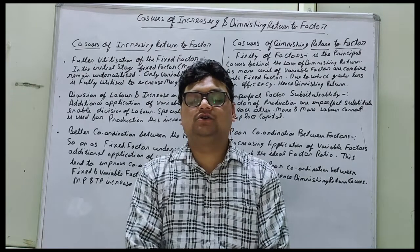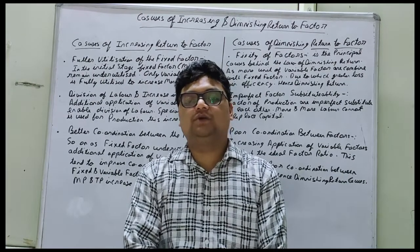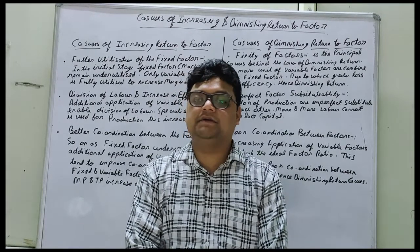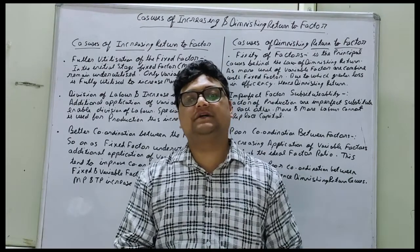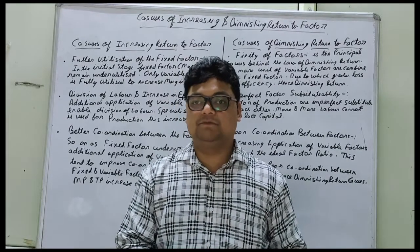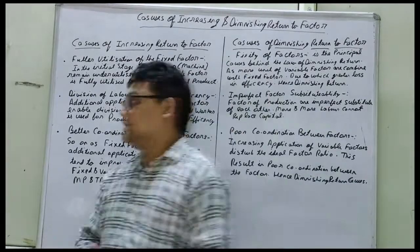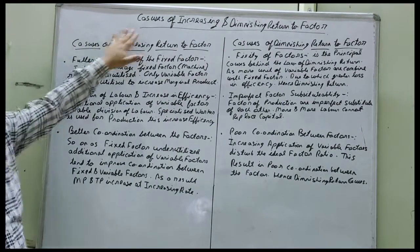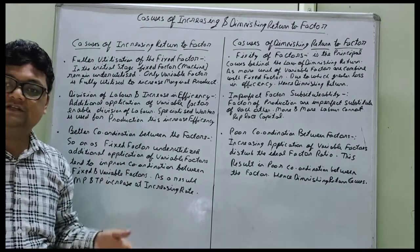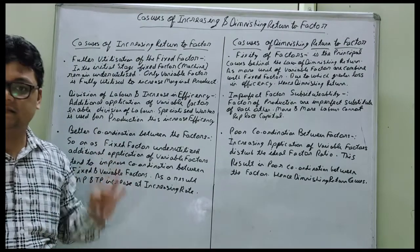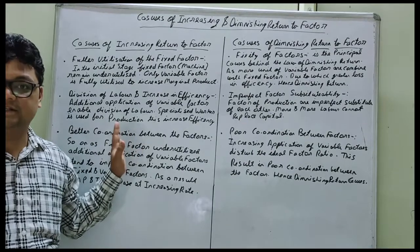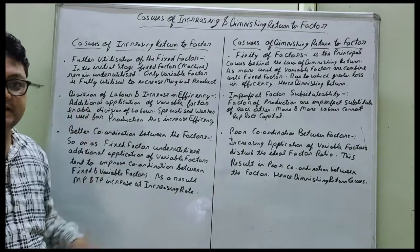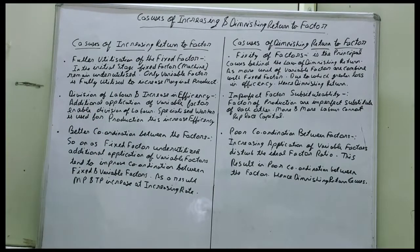Hello everyone, welcome back. Today we are going to learn the causes of increasing return to factor and diminishing return to factor. This topic is related to the previous topic, which is the law of variable proportion. We are first starting with causes of increasing return to factor. Increasing return to factor is the position in which total product and marginal product is increasing. This is also known as the first stage, as there are three stages.